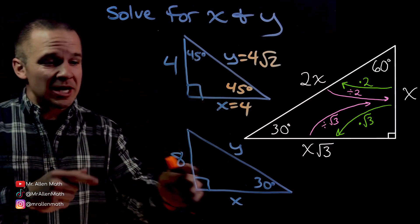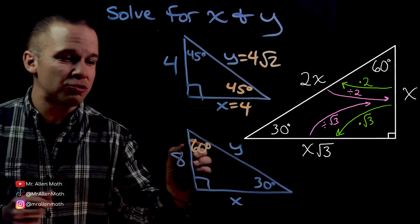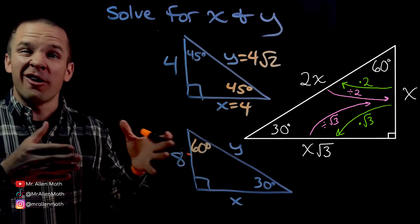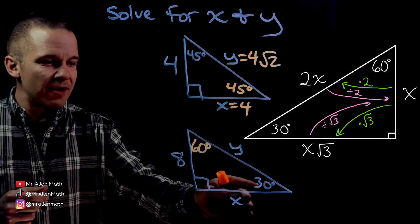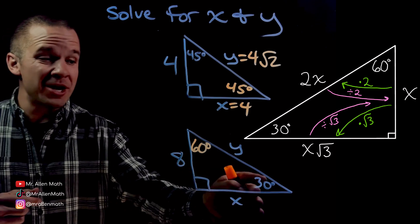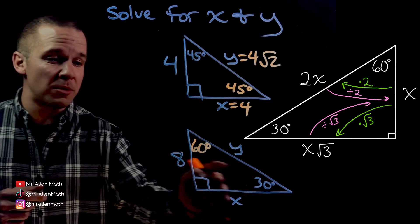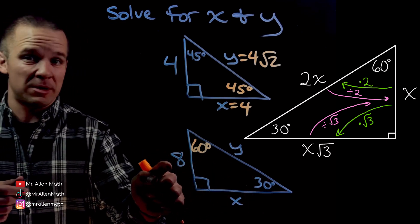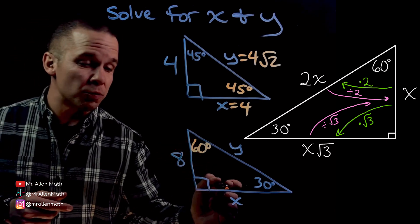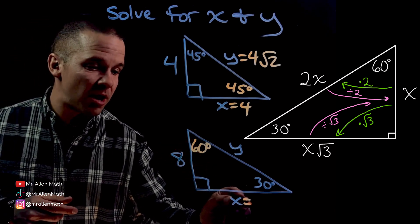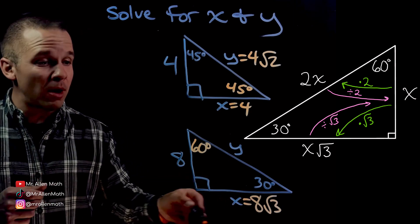Next one. This is a 30-60-90 triangle — 180 degrees in that triangle. I've got my short side; I know that because it's across from the smallest angle. 30 is the smallest angle, so that's my smallest side. I know that the side across from the 60 is root three times larger, so we're going to have eight root three for that.